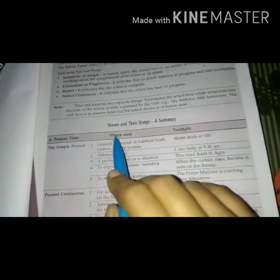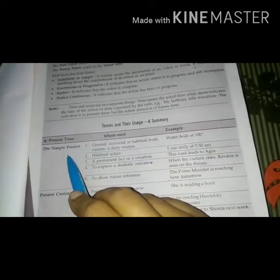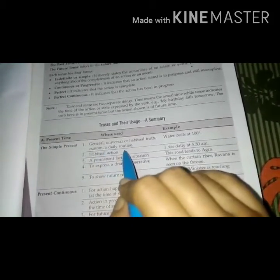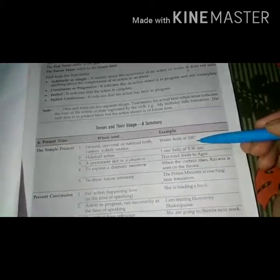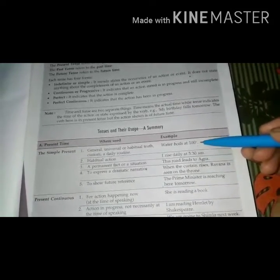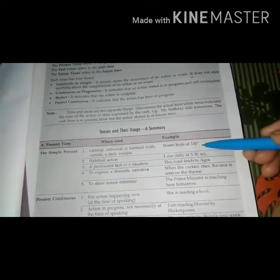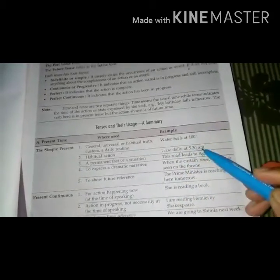Tenses and their uses, a summary. The simple present: General, universal or habitual truth, custom, a daily routine. Example: water boils at 100 degrees Celsius. Number two, habitual action: I rise daily at 5:30 am.